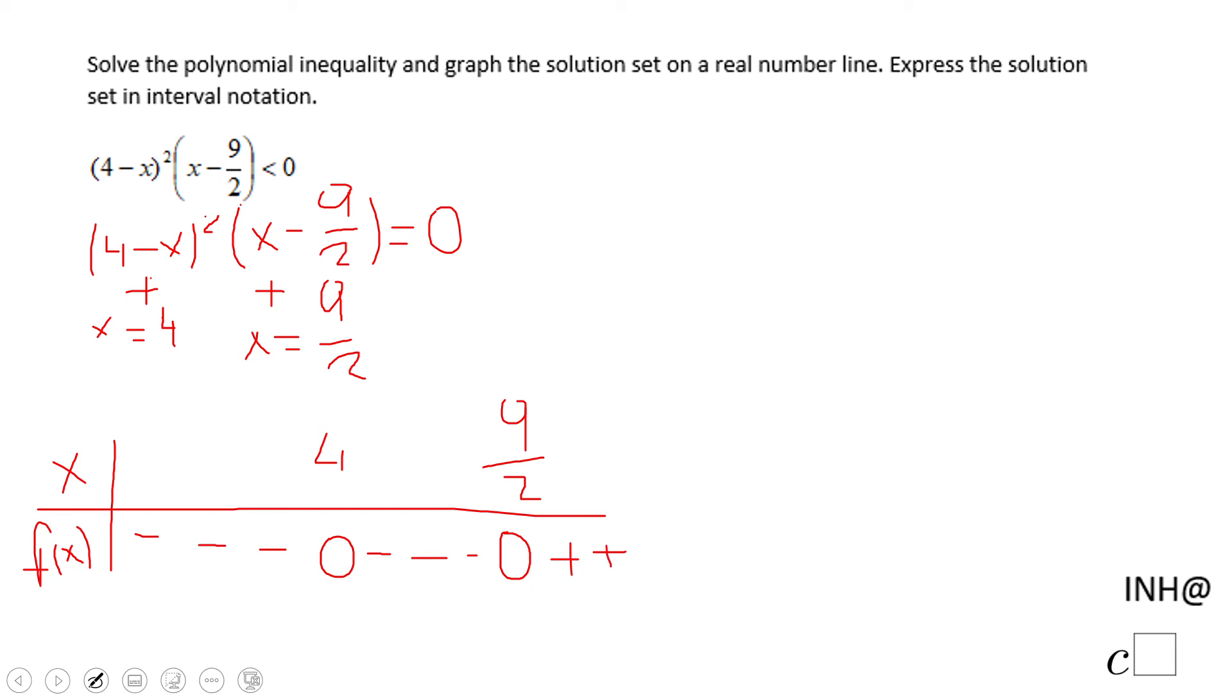Now we're looking back to our problem, which asks us when this polynomial function is less than zero. So you need to be careful here because you have two intervals: negative infinity to 4, and then 4 to 9/2.